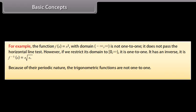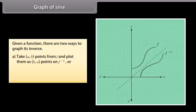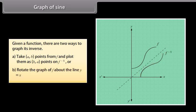Because of their periodic nature, the trigonometric functions are not one-to-one. Given a function, there are two ways to graph its inverse: first, take (a, b) points from f and plot them as (b, a) points on f⁻¹; or second, rotate the graph of f about the line y = x.